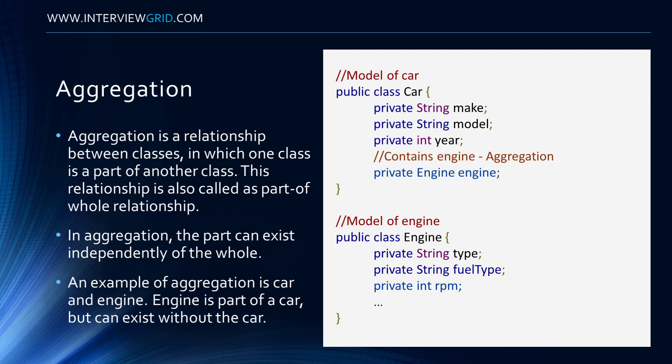Aggregation. Aggregation is a relationship between classes, in which one class is a part of another class. This relationship is also called a part-of-whole relationship. In aggregation, the part can exist independently of the whole.